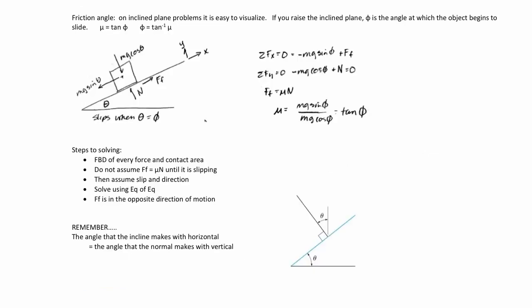The friction angle is something pretty handy and important. At slip, the angle is related to the coefficient of friction by: mu equals the tangent of the friction angle. We call this angle phi — the angle at which everything begins to slip. If we're looking for the friction angle and we know the coefficient of friction, we can just take the inverse tangent.